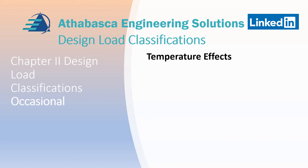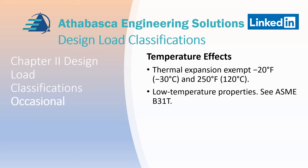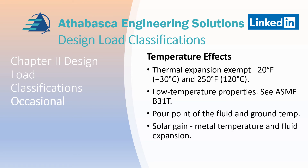Next is temperature effects. B31-4 has an exemption for thermal expansion stresses in the range from minus 20 to 250 Fahrenheit. However, it's important to note that the low-temperature material property requirements must still be met — for example, impact properties. Also consider the pour point of the fluid and the ground temperature when examining temperature effects. Solar gain can also affect the metal temperature and fluid expansion temperature, so that is required to be considered.